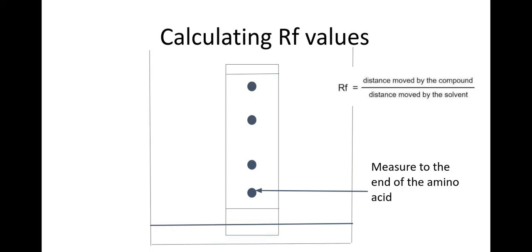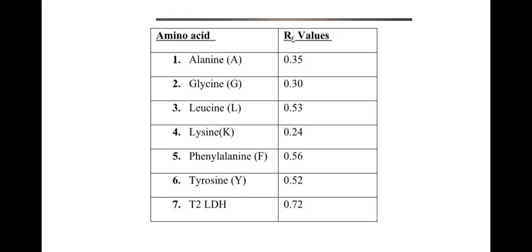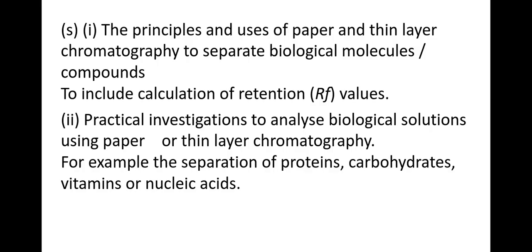So for example you're more likely to be provided with a table that looks like this and in that table those are the known RF values. So say for example you measured 0.3 as an RF value, you could then conclude that that amino acid was glycine and that is pretty much everything that you need to know about thin layer chromatography and RF values.